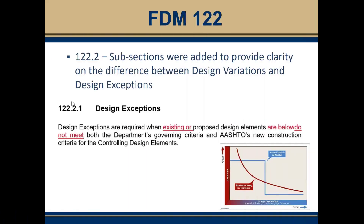One of the first sections updated was section 122.2. Previously, design exceptions and variations were written in paragraph form. We chose to break that out into separate sections describing in more detail what was expected for design exceptions and design variations. There were a few minor edits to reinforce the fact that design elements could be both below or above department or AASHTO criteria. This is a minor edit added to chapter 122.2.1.